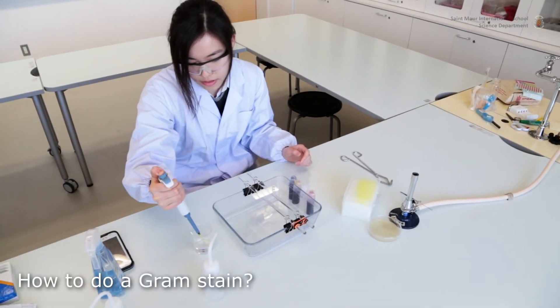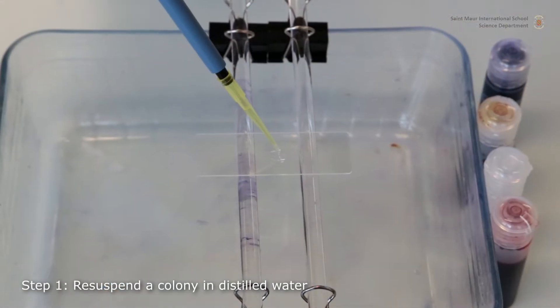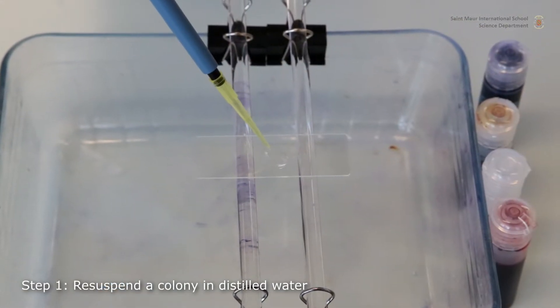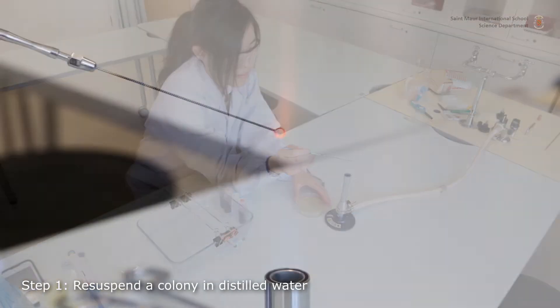Gram staining is used to differentiate bacterial isolates into two large groups based on the properties of their cell walls. The method was developed in 1884 by Danish scientist Hans Christian Gram.